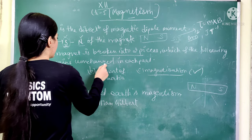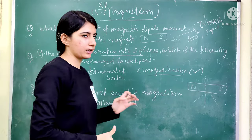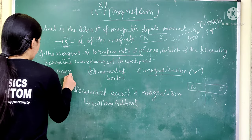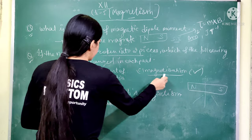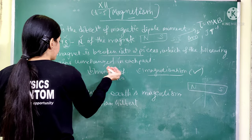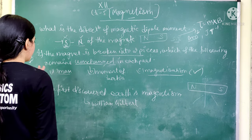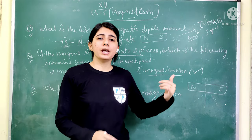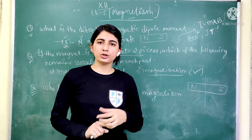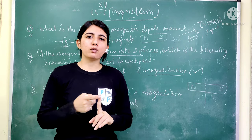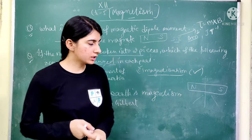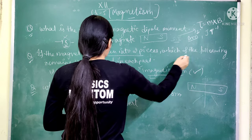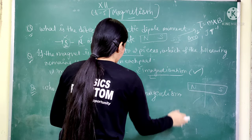So, which of the following remains unchanged in each part? The three options are: first, mass; second, moment of inertia; and third, magnetization. The question is which of these three properties will remain unchanged in each part when the magnet is broken into two pieces.